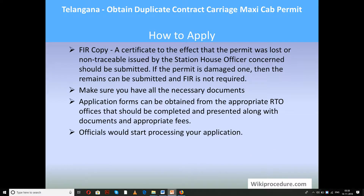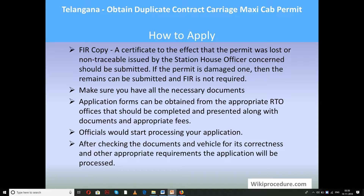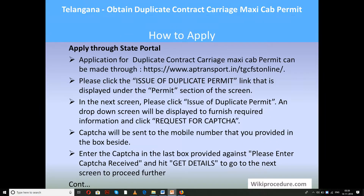A certificate to the effect that the permit was lost or not traceable, issued by the Station House Officer concerned, should be submitted as a main document. If the permit is damaged, you can attach the remaining pieces. Make sure you have all the documents in hand. Application forms can also be obtained directly from the RTO office when you visit. Fill the application form, attach all documents, and submit it to the office. The officer will guide you on the amount to pay and at which counter. Please pay the fees at the right counter.